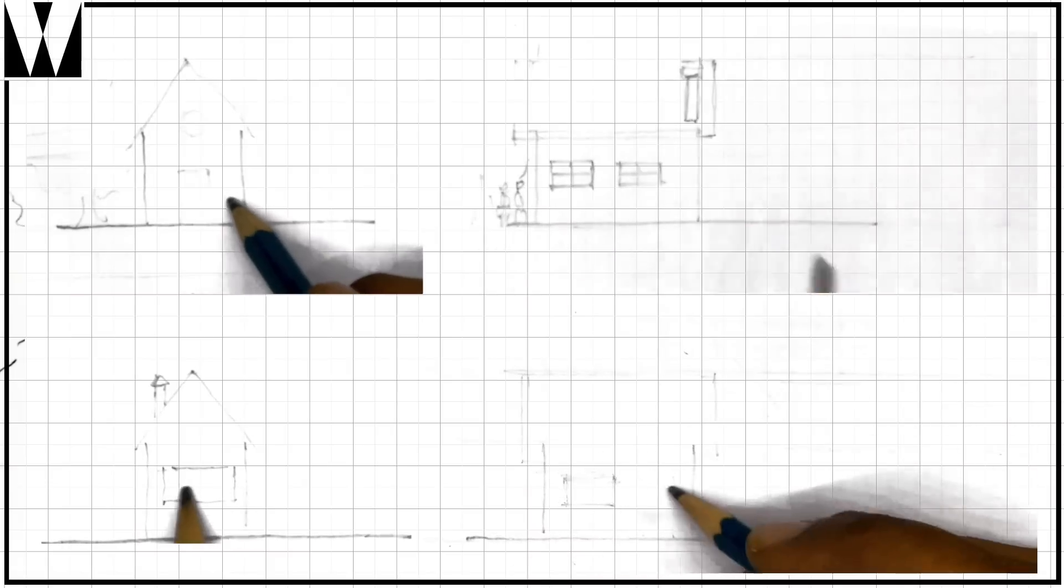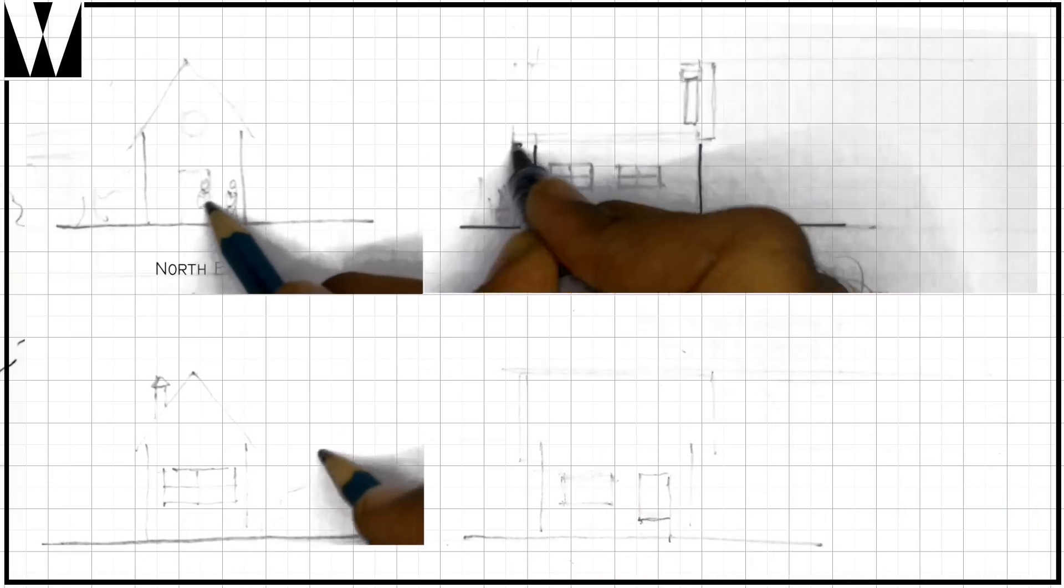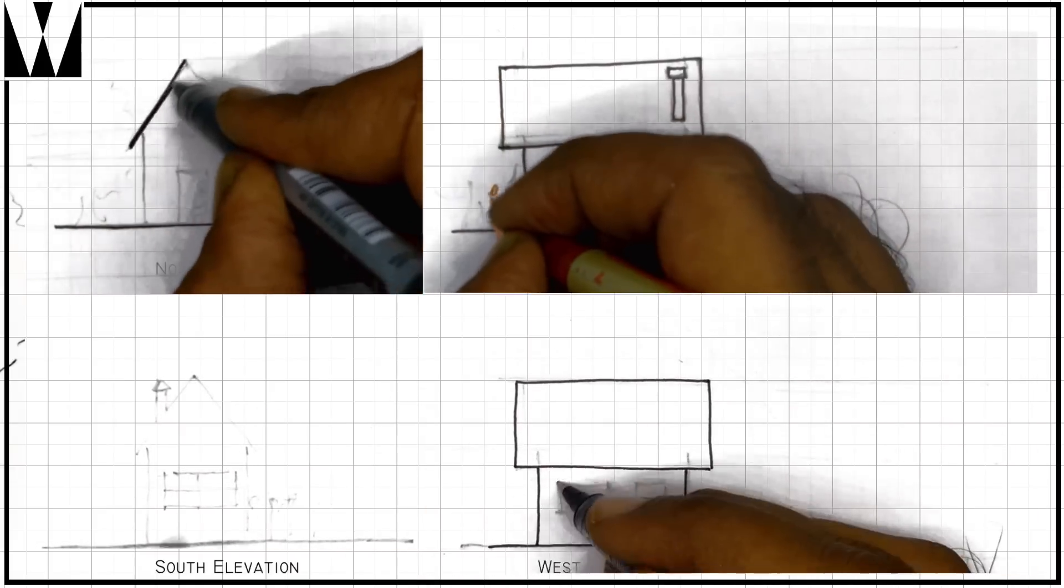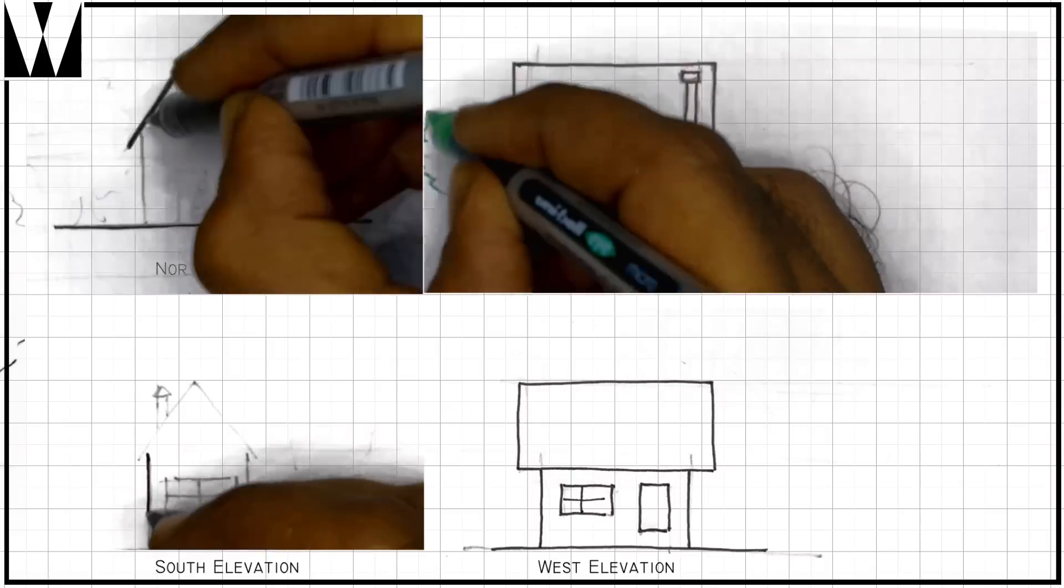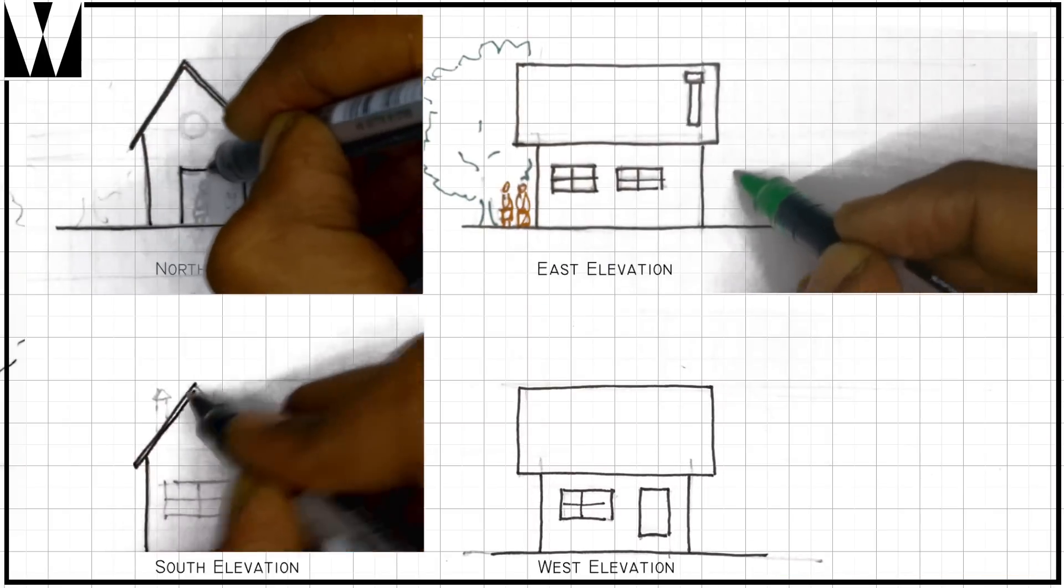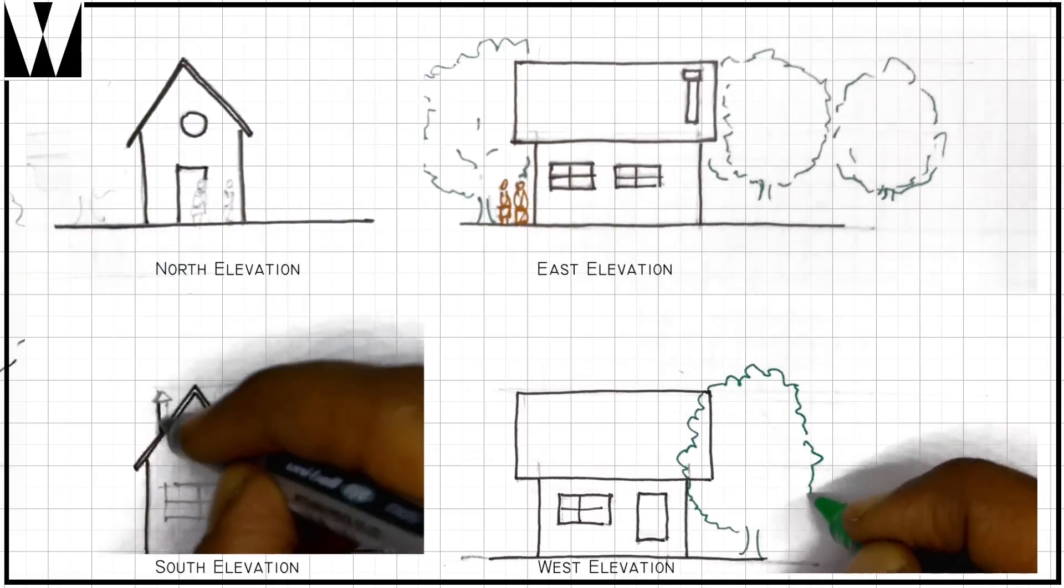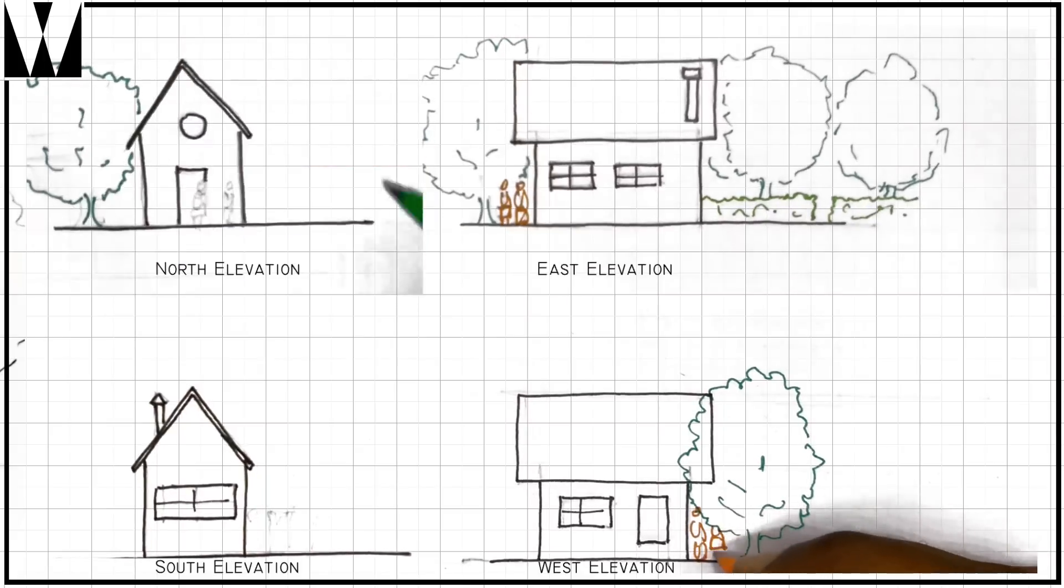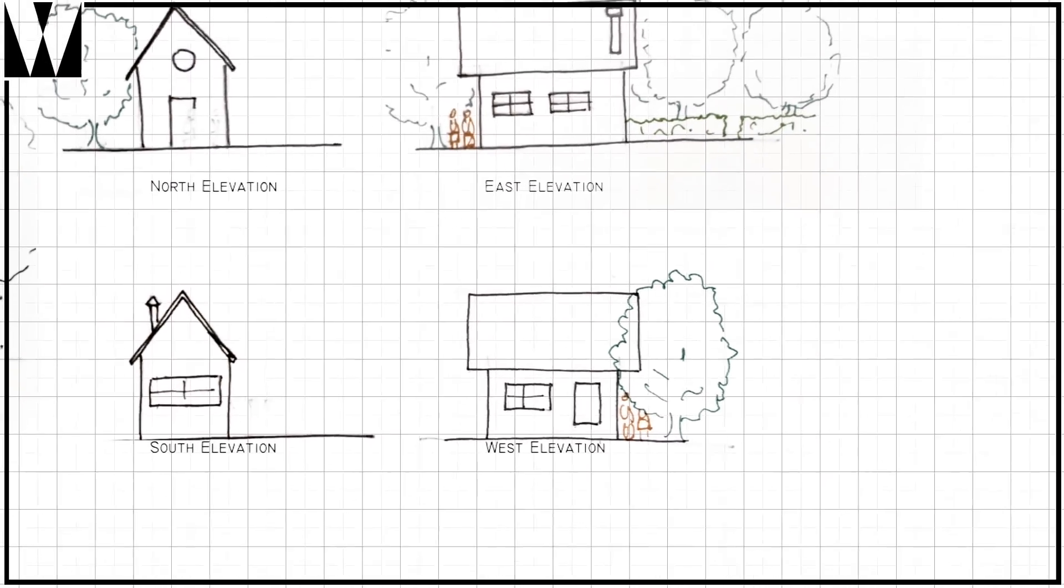So these 4 elevations that we are drawing here are the north, east, west and south elevations of the house. Naming it this way helps us avoid confusions as to which the front of the building really is, especially when buildings get more and more complex.